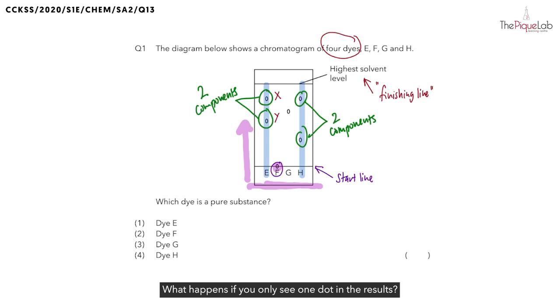What happens if you only see one dot in the results, like in sample G? How many components is dye G made of? Since you only see one dot, this means that it is made up of only one component and it is not mixed with any other substance.